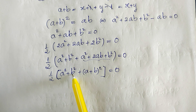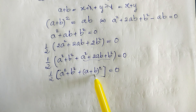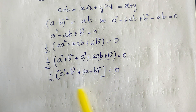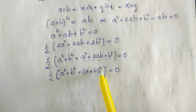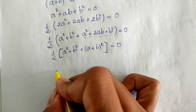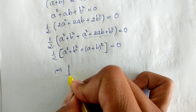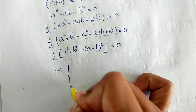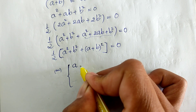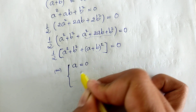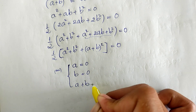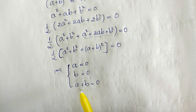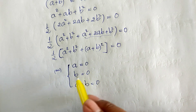Now, a squared plus b squared is positive, (a plus b) squared is also positive, and together this expression equals zero. Therefore each term must equal zero: a equals zero and b equals zero, so a plus b equals zero.